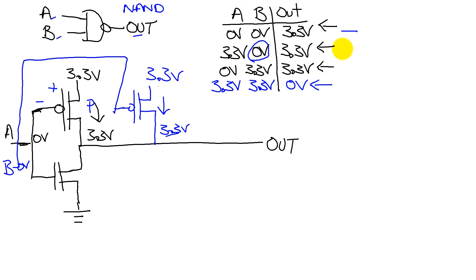We've handled these three cases. Next, we have to handle the case of how to create a zero if both A and B are high. So what we're going to need to do is add another N channel, but rather than putting it in series, we're going to put it in parallel.